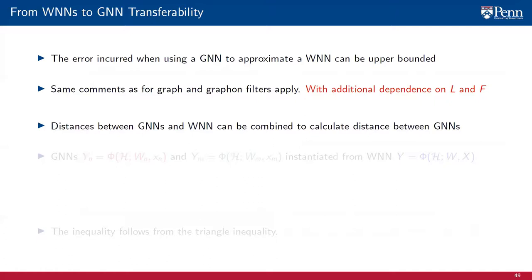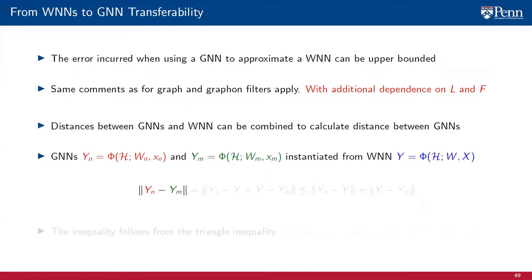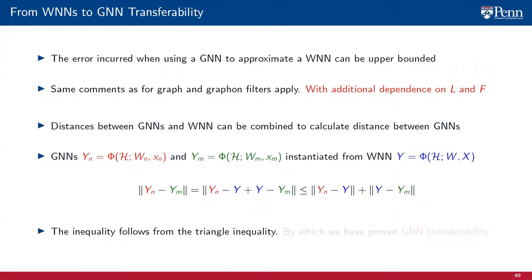The GNN-WNN approximation theorem is important because it is the stepping stone to proving transferability of GNNs. The distance between GNNs and the WNN can be combined to bound the distance between GNNs supported on weighted graphs with different numbers of nodes instantiated from a graphon. Consider the WNN Y_N induced by the GNN on the N-node graph G_N and Y_M induced by the GNN on the M-node graph G_M. The distance between Y_N and Y_M can be bounded by adding and subtracting the graphon signal Y, splitting the sum between the error incurred approximating the WNN with the GNN on N nodes and on M nodes. The sum can be split by the triangle inequality, and because both error terms are bounded, we have proved GNN transferability from G_N to G_M.